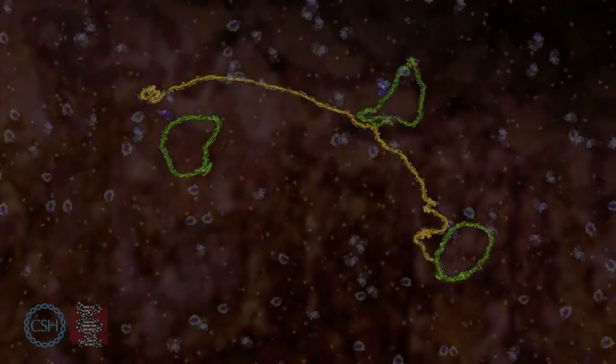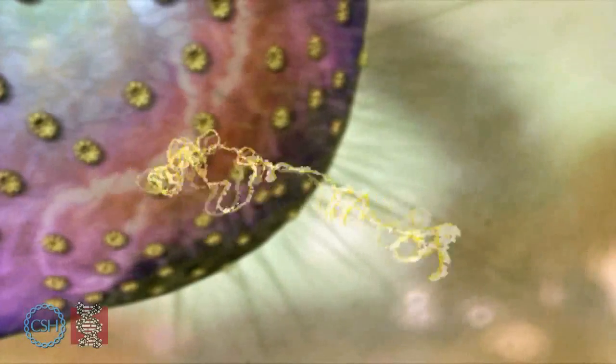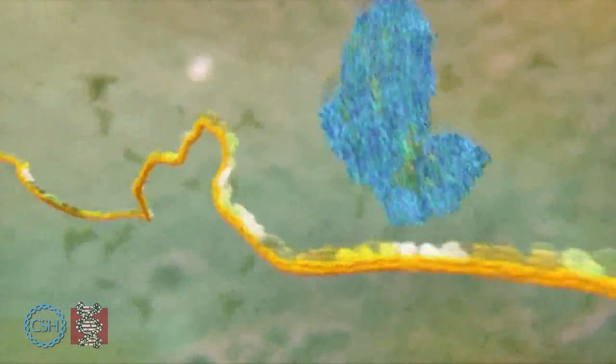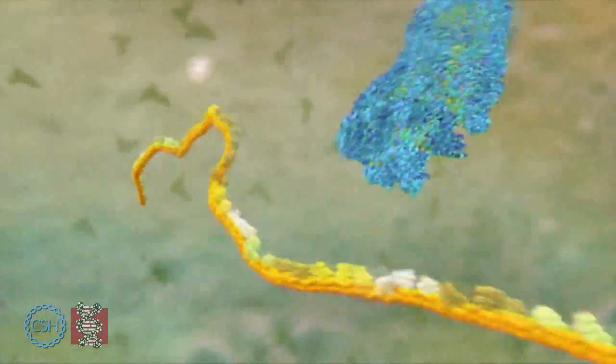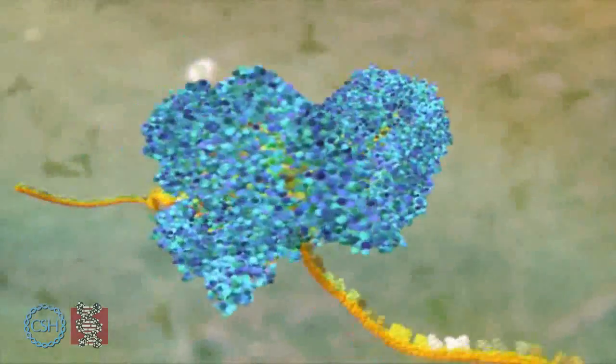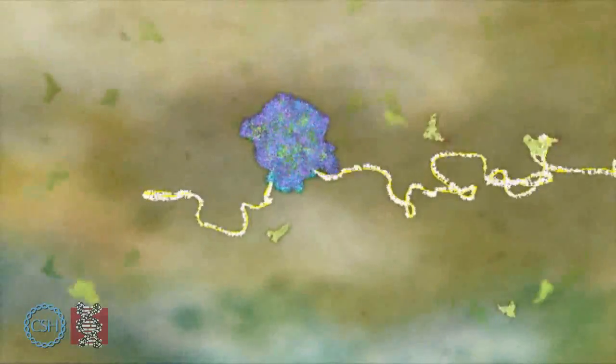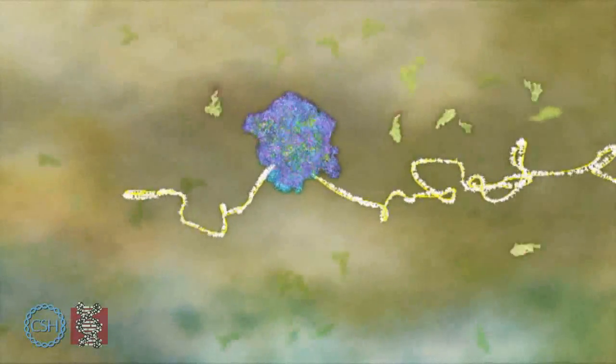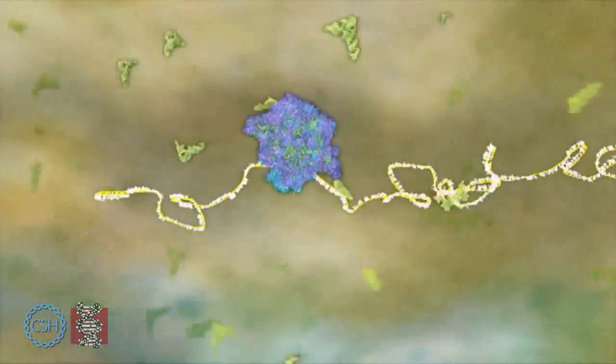When the RNA copy is complete, it sneaks out into the outer part of the cell. Then all the components of a molecular factory called a ribosome lock together around the RNA. It translates the genetic information in the RNA into a string of amino acids that will become a protein.